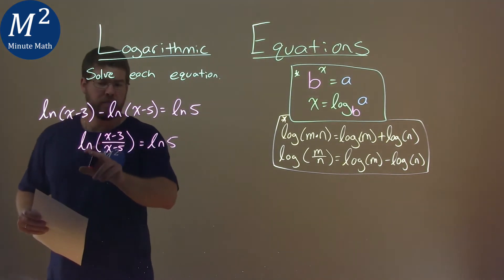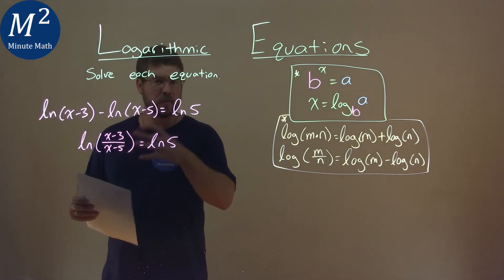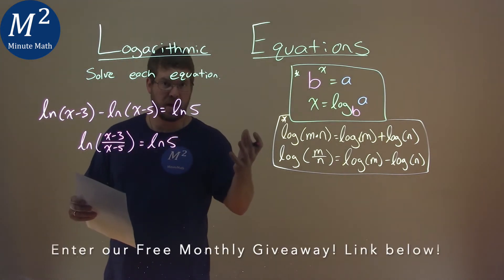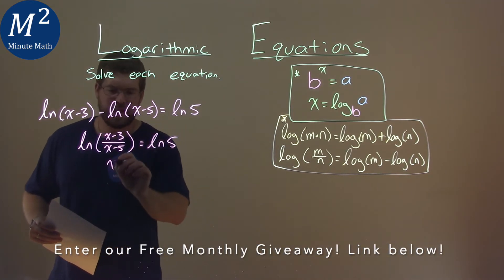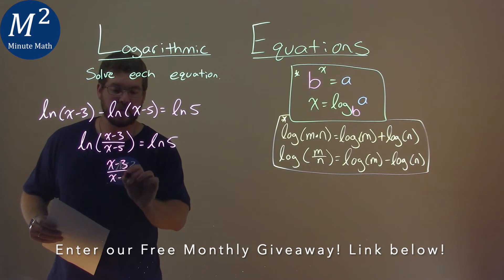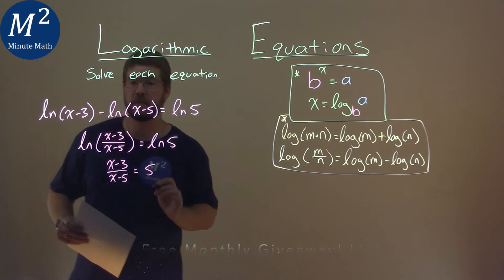Again, now we have natural log and natural log. They're equal to each other, and there's nothing else really there. When that happens, we can set the insides equal to each other. So we have x minus 3 over x minus 5 is equal to just a 5.